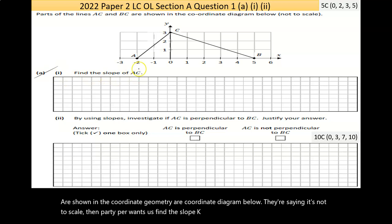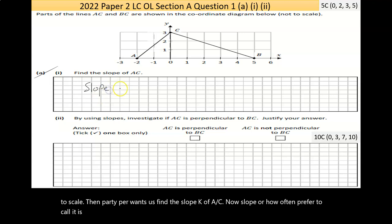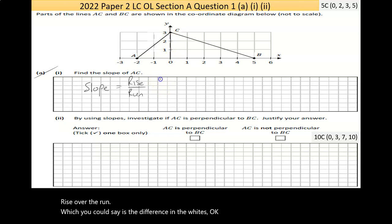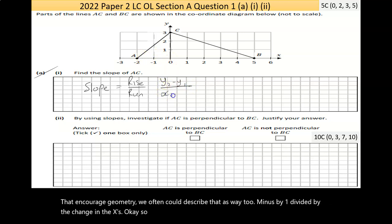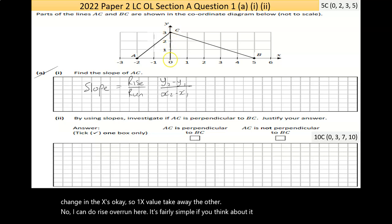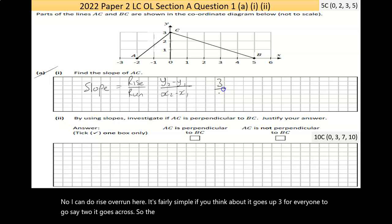Part A, part 1 says find the slope of AC. Now, slope, or what I often prefer to call the rate of change, is the rise over the run, which you could say is the difference in the y's. In coordinate geometry, we often describe that as y2 minus y1, divided by the change in the x's. I can do rise over run here. It goes up 3 for every 2 it goes across. So the rise over run is 3 over 2.